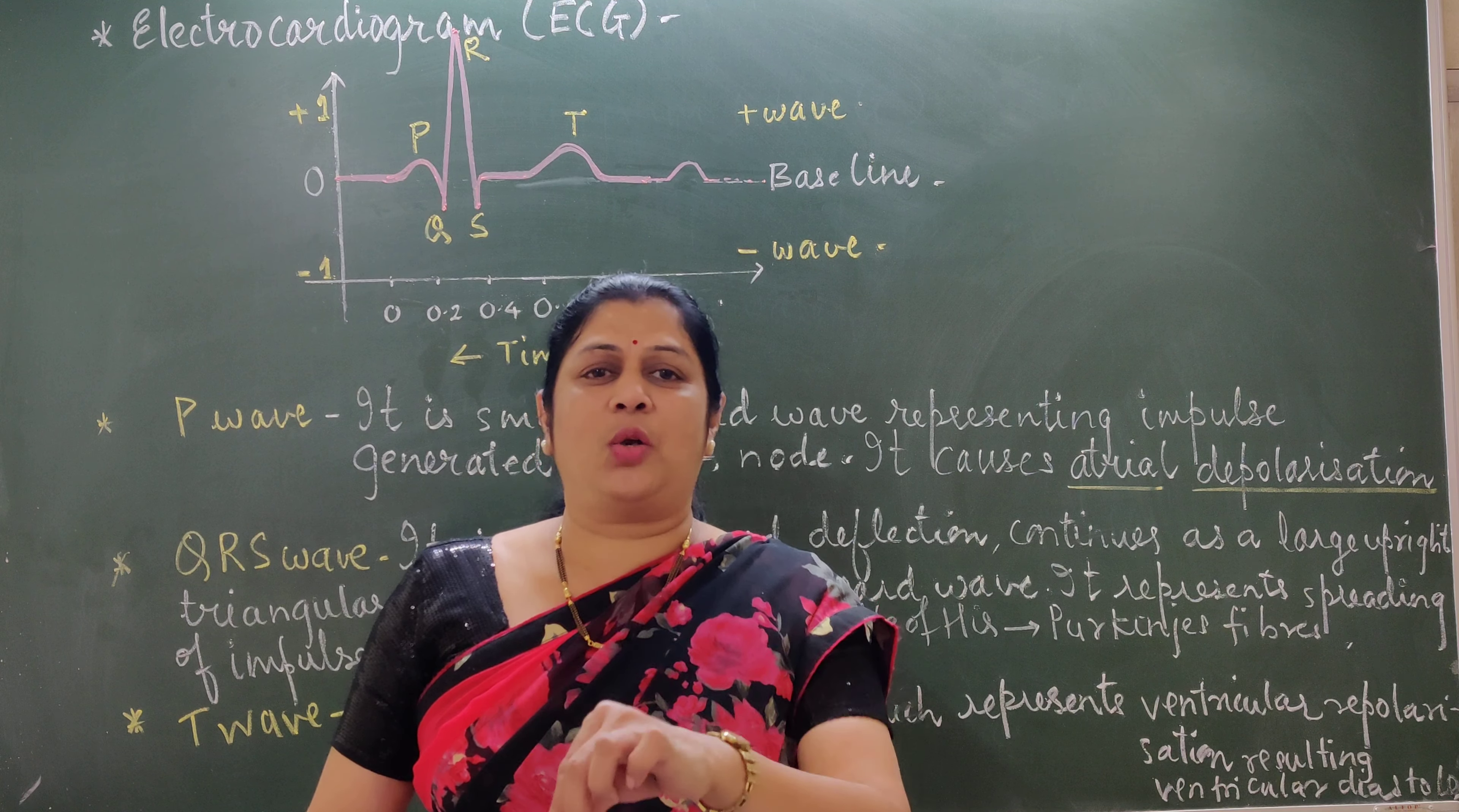Before that, the definition of electrocardiogram is a graphic record of electrical potential generated by the heart during one heartbeat or one cardiac cycle is called electrocardiogram. It is an action potential generated by the heart muscles to record the impulses.